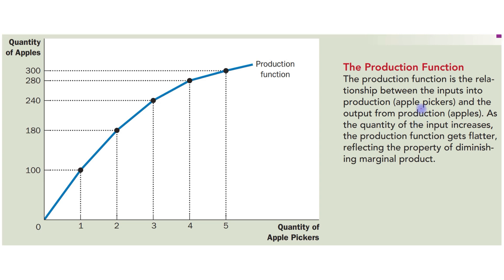This is a production function. What is a production function? The production function is the relationship between the inputs into the production — in our case, the input is labor, which means apple pickers — and the output from production. What is the output? That is apples.